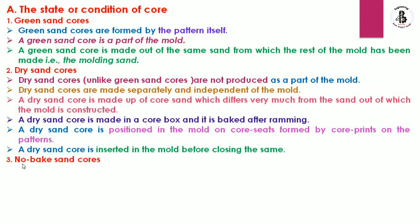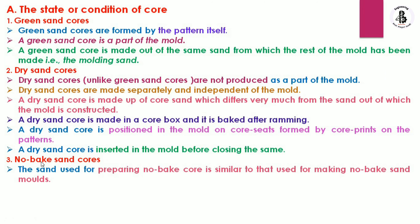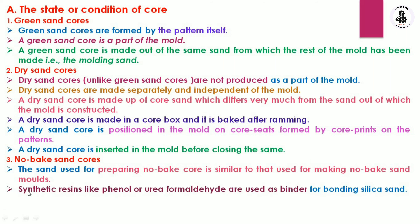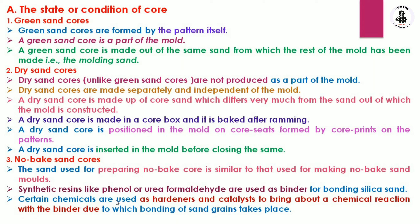The third type is no-bake sand cores. The sand used for preparing a no-bake core is similar to that used for making no-bake sand molds — quite similar sand is used for both mold and core making. Synthetic resins like phenol or urea formaldehyde are used as binders for bonding silica sand. Certain chemicals are used as hardeners and catalysts to bring about a chemical reaction with the binders, causing bonding of the sand grains.